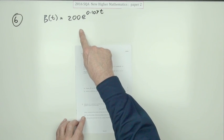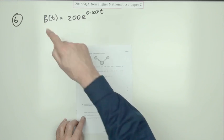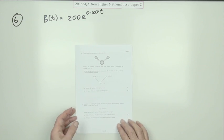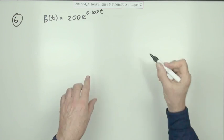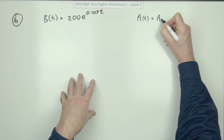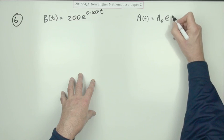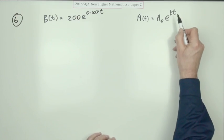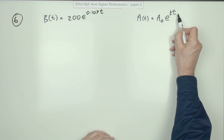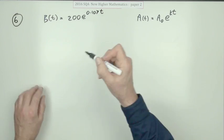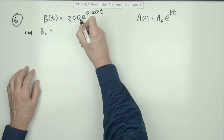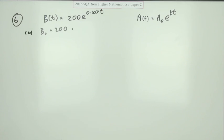Part A asks you to state the number of bacteria present at the start, where the variable represents the number of bacteria after a certain time in hours. In the usual form of a growth equation, the value at time T equals the initial value times a growth factor of the form e to the kT. As long as T appears on its own and not in a linear function, the coefficient out front must be the initial amount. So for part A, the initial amount B-naught must be 200, and simply stating that gets you the mark.